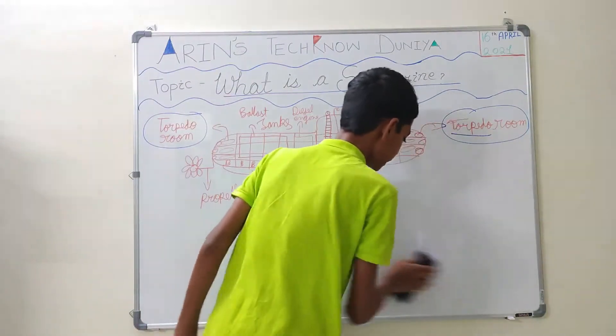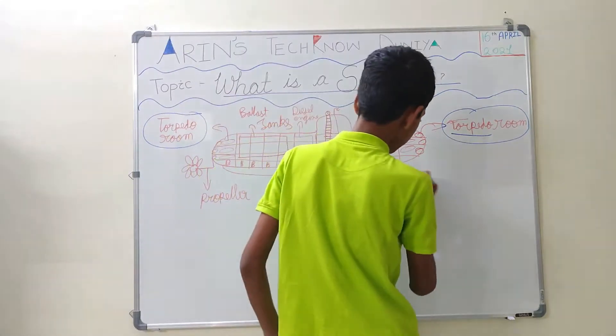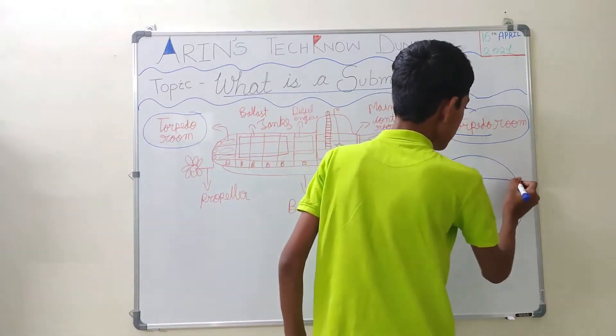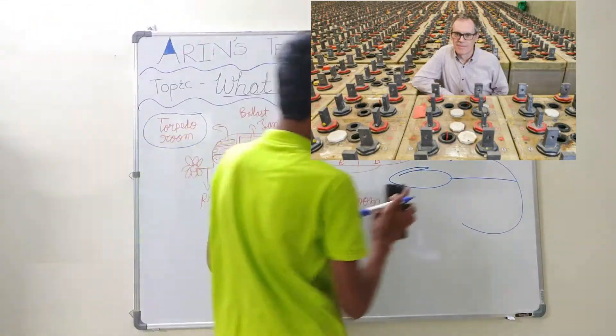Torpedoes are not fired manually. They are loaded into torpedo tubes. Like if this is a torpedo, it is loaded into a torpedo tube and then it is fired.